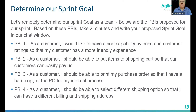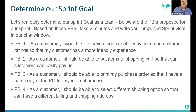I have four PBIs proposed for our sprint, for a site called Parts Unlimited that sells tires and wheels. PBI 1: As a customer, I would like to have a sort capability by price and customer ratings so that my customer has a more friendly experience. PBI 2: As a customer, I should be able to put items in a shopping cart so that our customers can easily pay us. PBI 3: As a customer, I should be able to print my purchase order so that I have a hard copy for my internal process. PBI 4: As a customer, I should be able to select different shopping options so that I can have different billing and shipping.